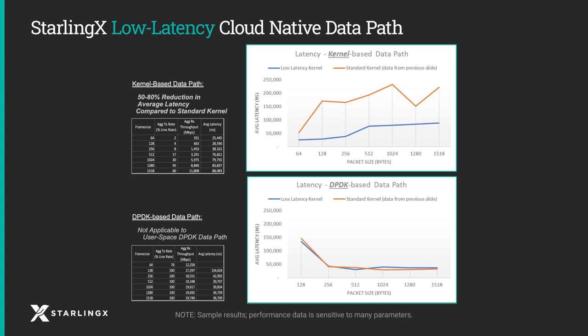Here you can see that the kernel-based datapath has an average latency that is 50% to 80% lower than seen with the standard kernel. Note that this comes with a trade-off of lower throughput than seen with the standard kernel. Note also that the user-space DPDK datapaths — both throughput and latency — are unaffected by the low-latency kernel.